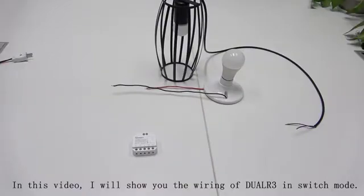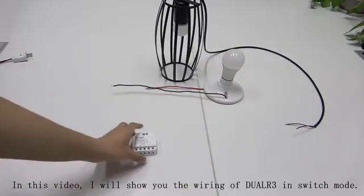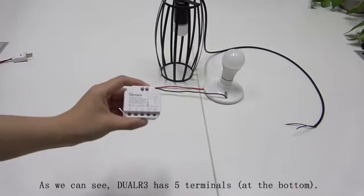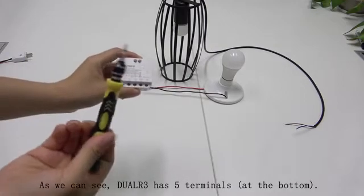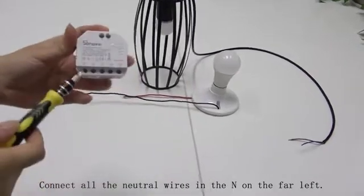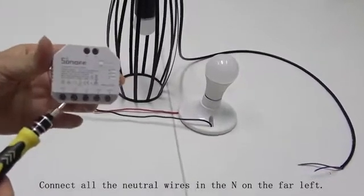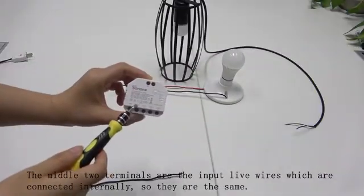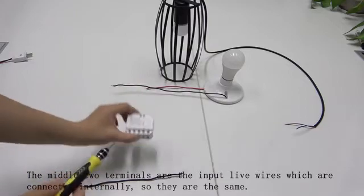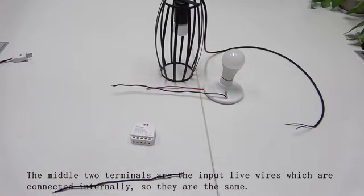In this video, I will show you the wiring of DUA3 in switch mode. As we can see, DUA3 has 5 terminals. Connect all the neutral ones in the N on the far left. The middle two terminals are the input live wires, which are connected internally, so they are the same.